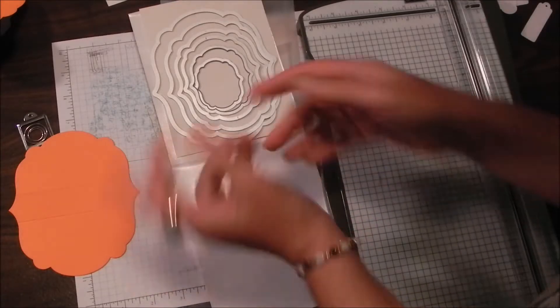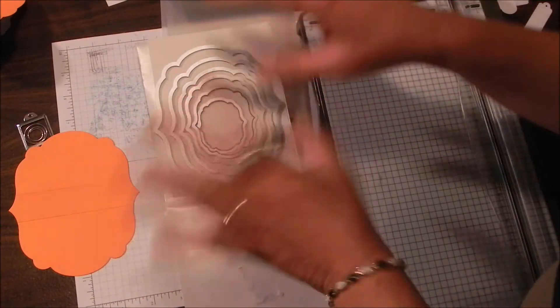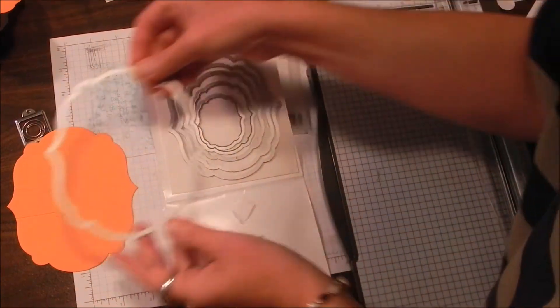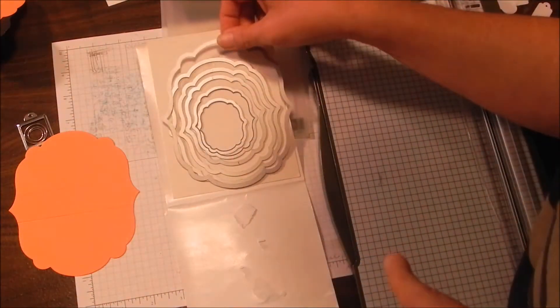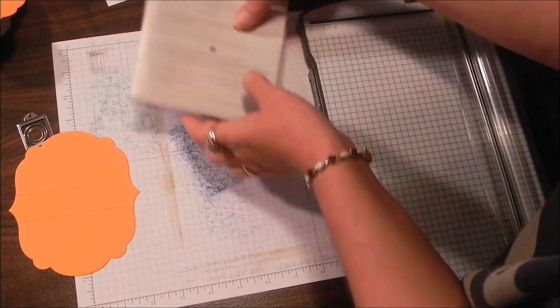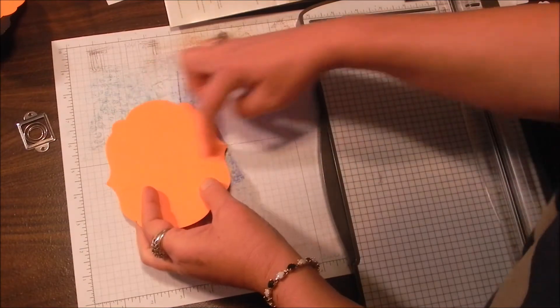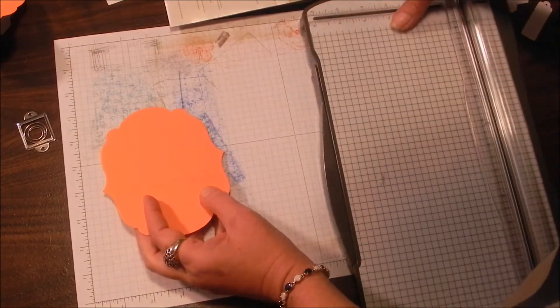Okay, we're going to begin with these framelits. These are the labels collection framelits, but that's not where we're going to end. You want to take the largest one and go ahead and cut a piece of cardstock. The key to all these designs is a one inch base. The reason I chose this one to begin with is because the center is clearly marked.